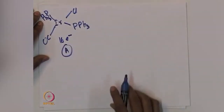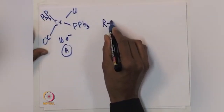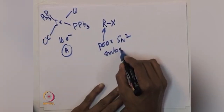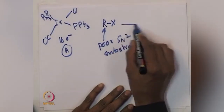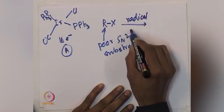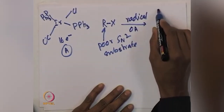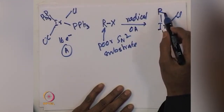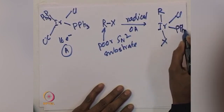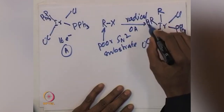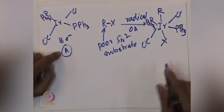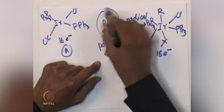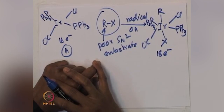Let us call this species A. This species A will react with Rx — let us say this is a poor SN2 substrate, for example tertiary butyl fluoride or anything that will not undergo SN2 reaction. This will undergo radical oxidative addition overall to give an iridium-R-X species. Let me first draw the oxidative addition complex. A 16-electron species is undergoing oxidative addition overall to give an 18-electron species.